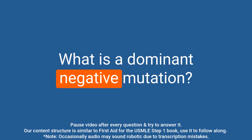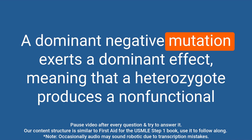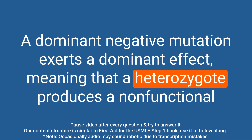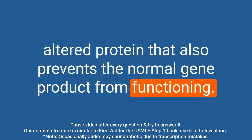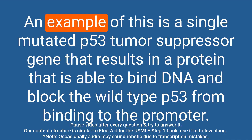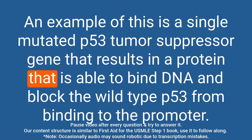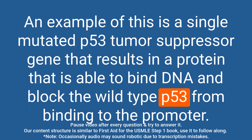Question: What is a dominant negative mutation? Answer: A dominant negative mutation exerts a dominant effect, meaning that a heterozygote produces a non-functional altered protein that also prevents the normal gene product from functioning. An example is a single mutated p53 tumor suppressor gene that results in a protein able to bind DNA and block the wild type p53 from binding to the promoter.